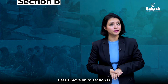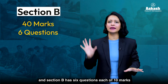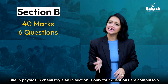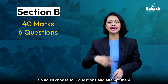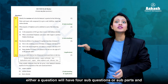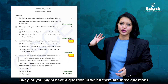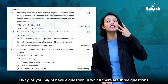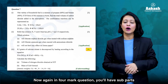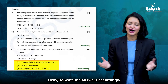Moving on to chemistry section B — it has a weightage of 40 marks with six questions of 10 marks each. Like physics, only four questions are compulsory, so you'll choose four and attempt them. The questions have two patterns: either four sub-parts where two questions are of two marks each and two are of three marks each, or three questions where two are of three marks and one is of four marks. In the four-mark question, you'll have further sub-parts. Write the answers accordingly.